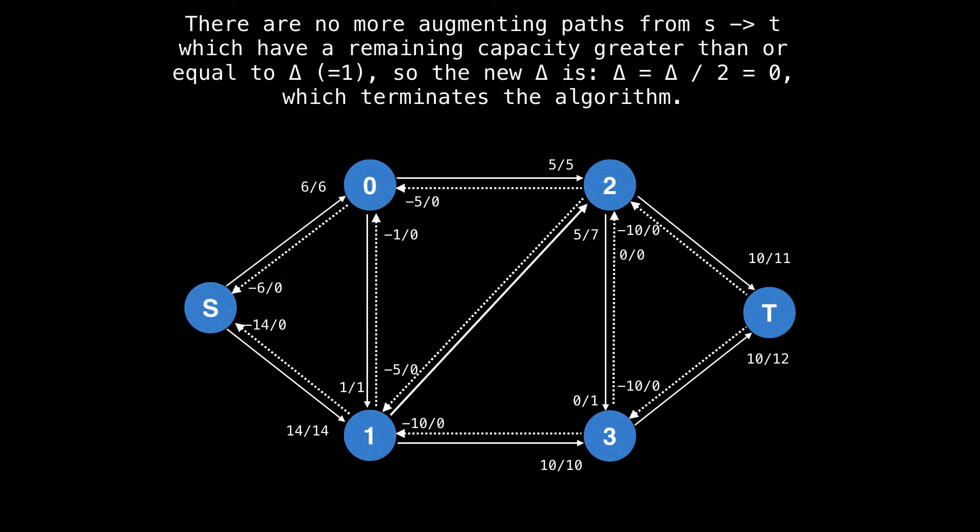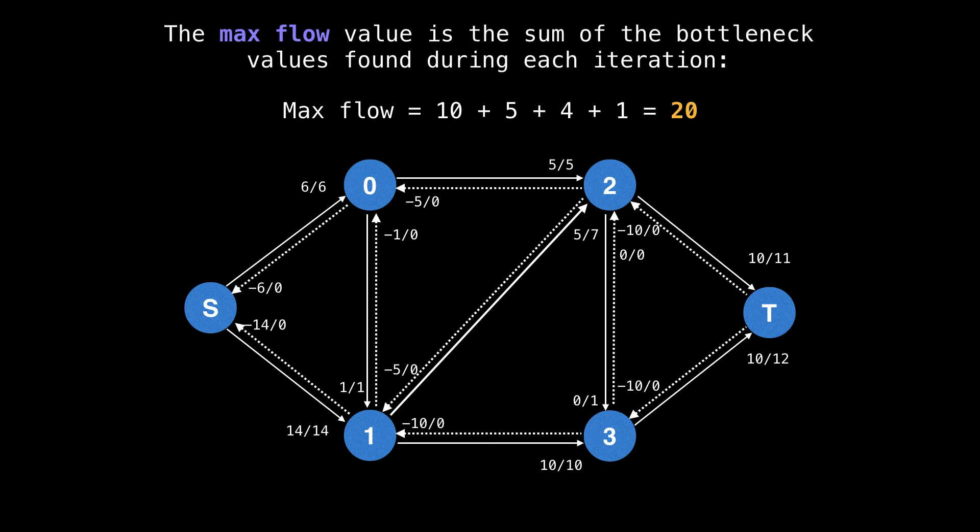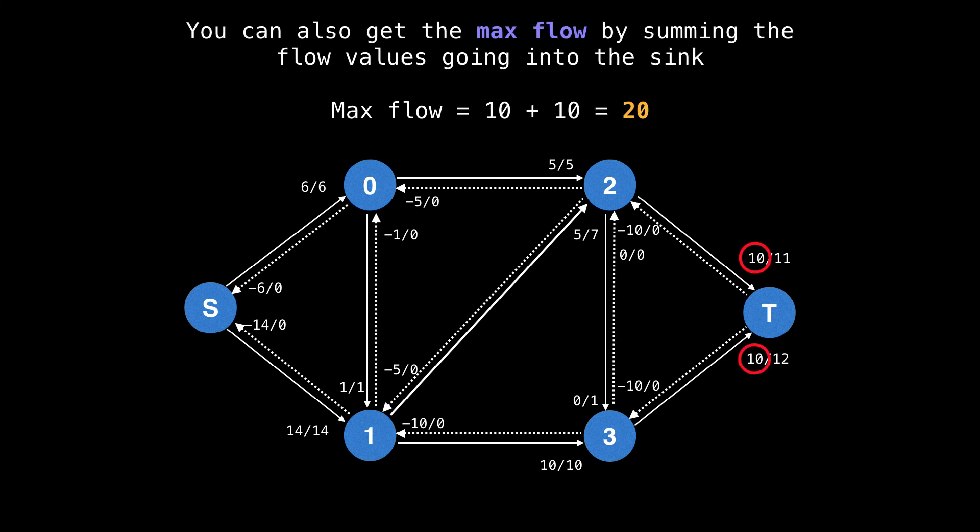And now there are no more paths from s to t which have a remaining capacity greater than or equal to one. So the new value of delta is zero, which terminates the algorithm. We can compute the maximum flow by summing up all the bottleneck values we found in each iteration, which we know to be 10, 5, 4, and 1 for a total of 20. We can also compute the maximum flow by summing the flow values going into the sink highlighted in red.